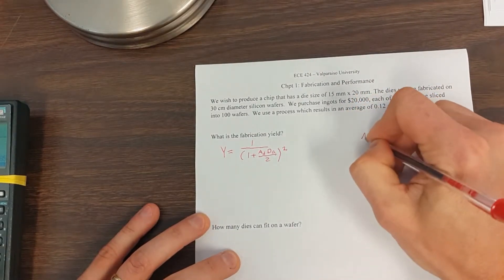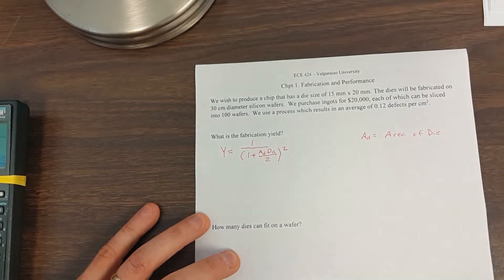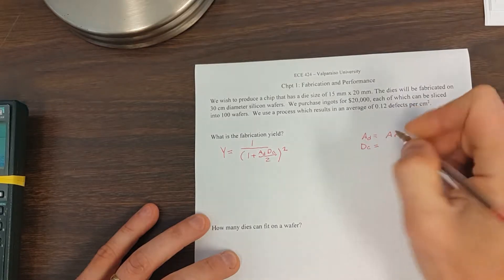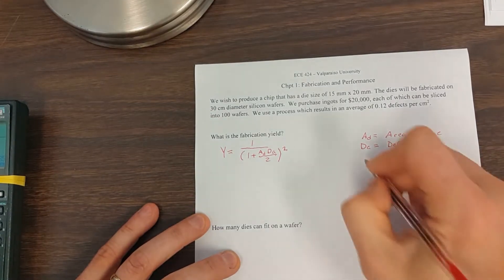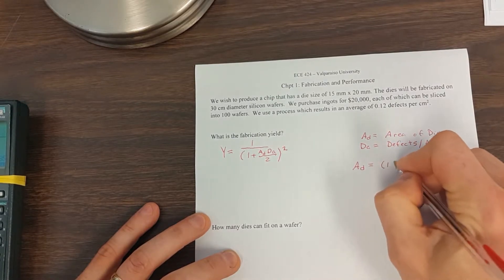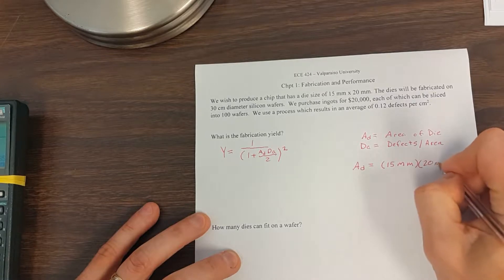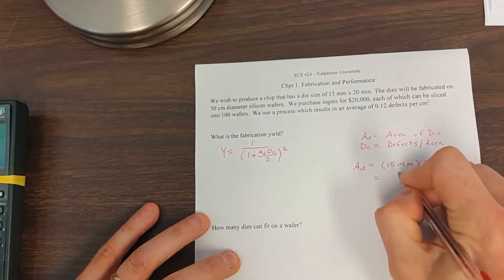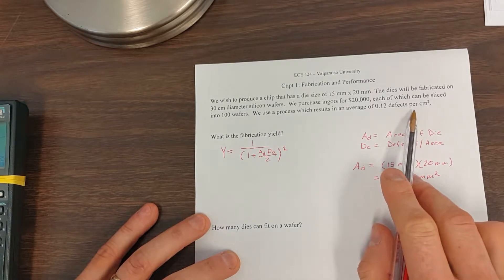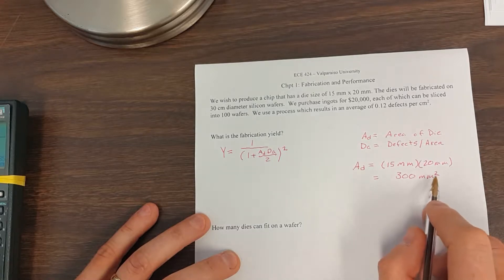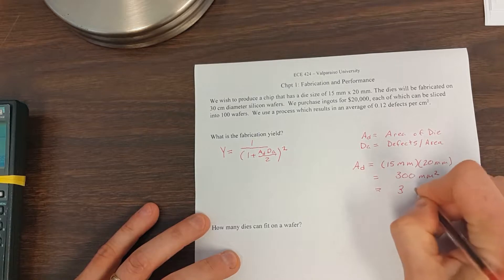So the area of the die, we're going to have to calculate, and the defects per area is given to us, so the area of the die is going to be 15 millimeters times 20 millimeters, and that results in 300 millimeters squared. Now I'm going to convert this because our other quantity is in terms of centimeters squared. Remember that since millimeters is squared, there's going to be 100 millimeters squared in every centimeter squared. So this gets converted to 3 centimeters squared.